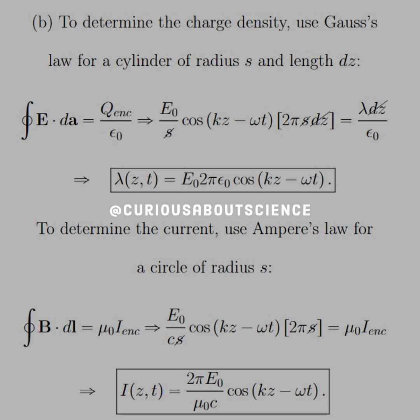And, to determine the current, use Ampere's law for a circle of radius S. So, the closed line integral is equal to mu I enclosed. To the same thing, we have a circle of radius S. So, the 2 pi S comes from the DL.